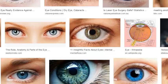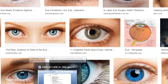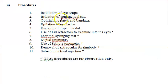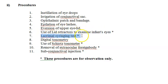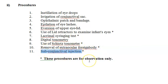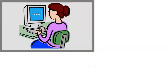For clinical procedures — some you will do, some you just observe and learn. You should be able to: instill eye drops, irrigate the conjunctival sac, apply patching and bandaging, perform epilation of eyelashes, eversion of the upper eyelid, and digital tonometry. However, the starred ones are for observation only — like use of lid retractors to examine an infant's eye, lacrimal syringing test, use of a special tonometer, removal of extraocular foreign body, and subconjunctival injection. These are observation procedures only. So this is the ophthalmology syllabus for MBBS — welcome to ophthalmology!